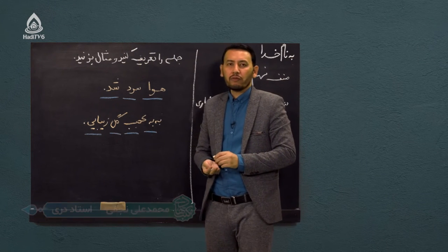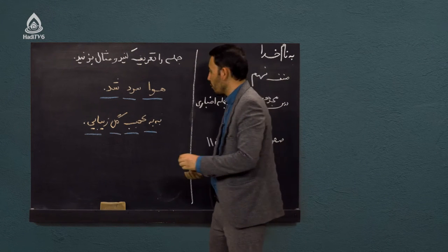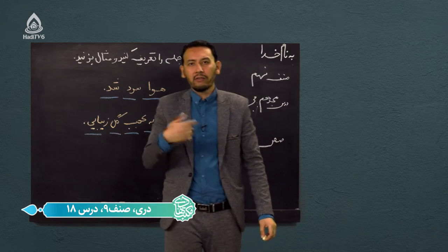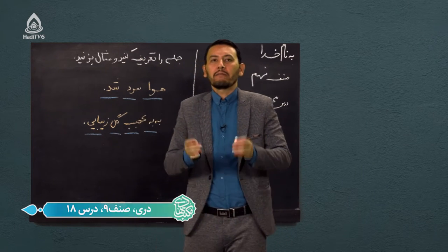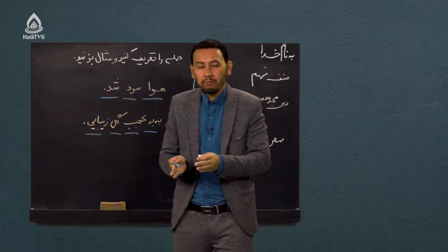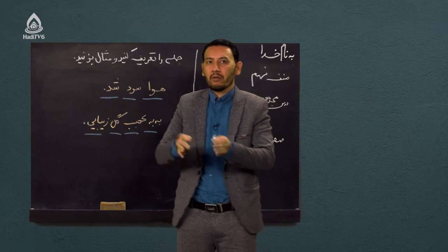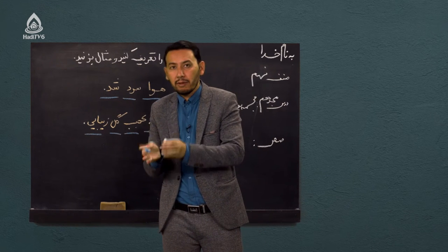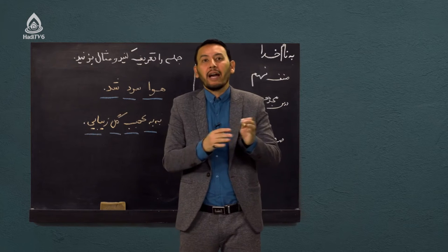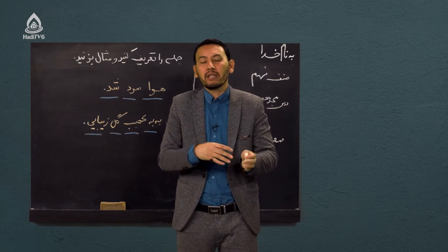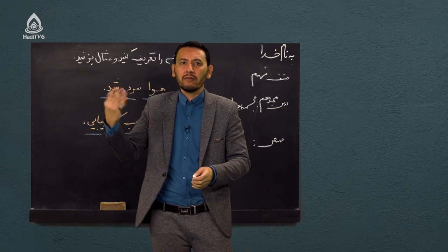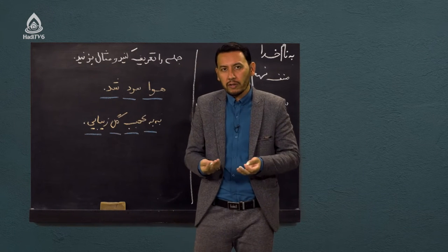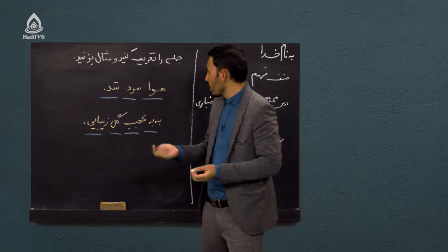یک تفاوتی وجود دارد. در ساختار جمله، جمله انواعی دارد. جمله می‌تواند بسیط باشد، می‌تواند مرکب باشد، می‌تواند جمله اسمی باشد، می‌تواند جمله خبری باشد، می‌تواند معترضه باشد. ساختارها می‌تواند متفاوت باشد.